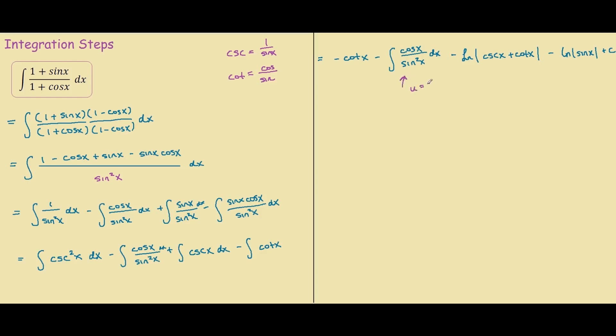You just select u equals sin x, du equals cos x dx. So we have du, if you replace cos x dx with du over u squared.